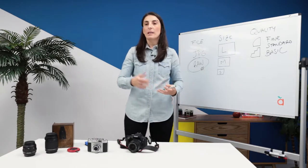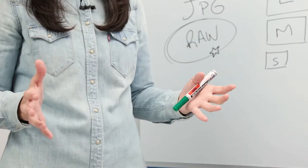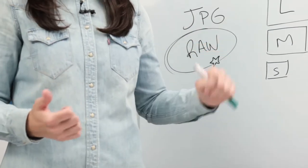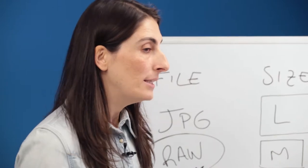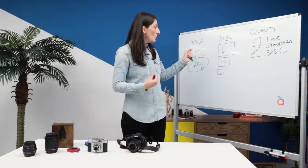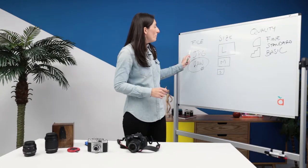Remember that JPG files are already finished, which is an advantage and also a problem since the file is already compressed and it comes with default settings such as contrast, saturation or definition, which we are going to learn about later. As I was saying, we're going to configure the settings in the camera, but we won't be able to change them afterwards.